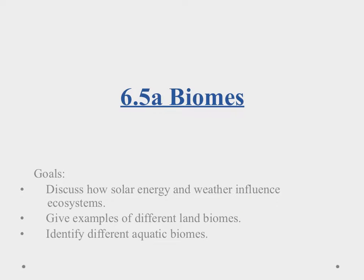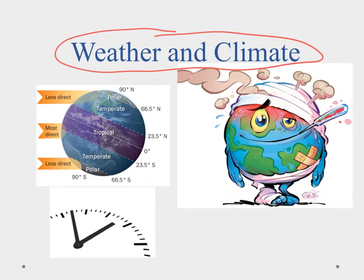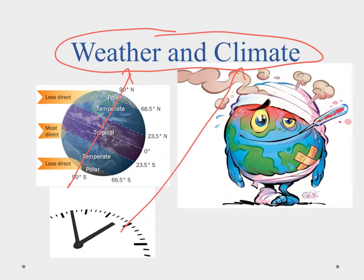Aloha and welcome to the biomes video. We'll discuss how solar energy and weather influence the ecosystem, give examples of land biomes, and identify aquatic biomes. When talking about biomes we have to compare weather and climate: weather is an instantaneous snapshot of what's going on outside, while climate looks at conditions over a long time. Uneven heating of the Earth's surface — because of our tilt — creates temperature differences that drive weather.